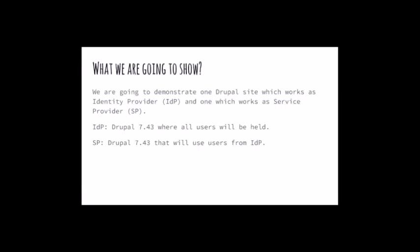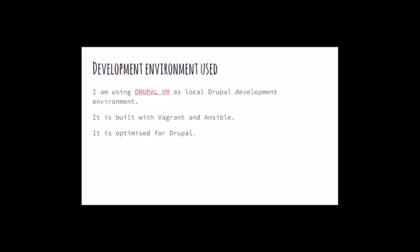So what are we going to demonstrate now? I'm going to show you two Drupal websites. One will work as an identity provider and the second one will work as a service provider. The first one will host all the users and the second one will use the users from the identity provider. Both have been built on Drupal 7.43, which is the latest Drupal 7 release at the time of this presentation. I'll be using my local Drupal environment using Drupal VM, which is a Vagrant box built with Ansible and optimised for Drupal.